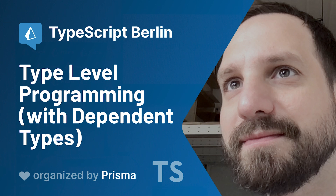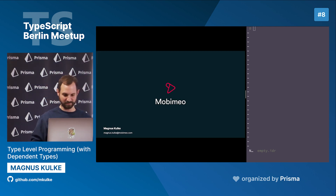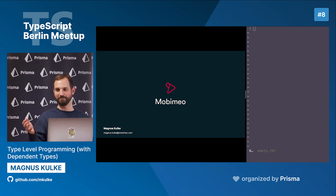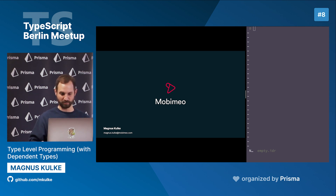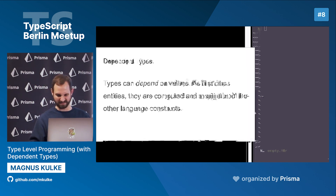The topic today is type level programming with dependent types, which I find interesting. At MobiMail, where I work, we've worked for quite some years with TypeScript, and it's always exciting when you get a new release. You think it's feature complete, and then they come up with stuff that actually makes you solve problems you didn't even know you had — like functional programming parts, and iteratively with every release, something new.